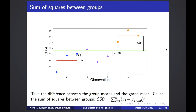We can also look at another type of sum of squares: the difference between the mean of each group and the grand mean. We call this the sum of squares between groups, or SSB. If SSB is large, that means the group means are very far from the grand mean, which implies at least one group mean is far from the others. So if we want to reject our null hypothesis, we want SSB to be large.